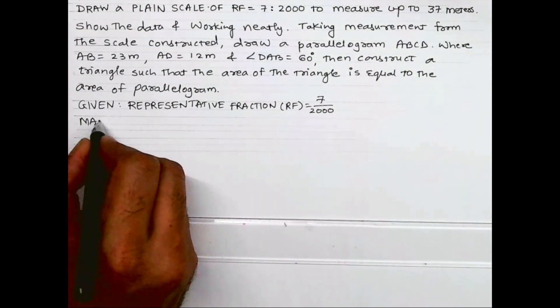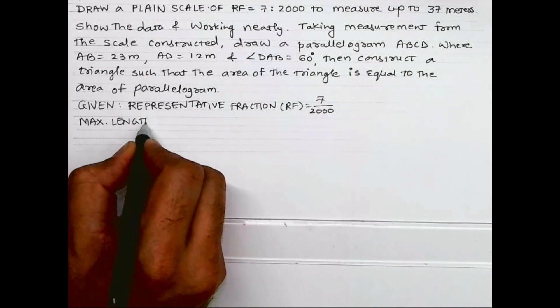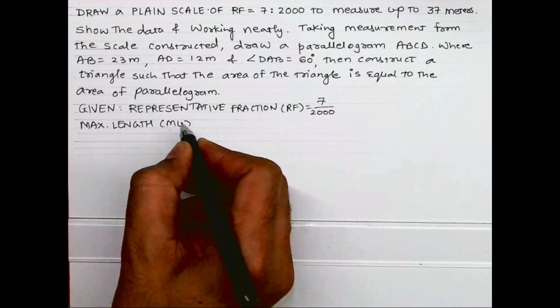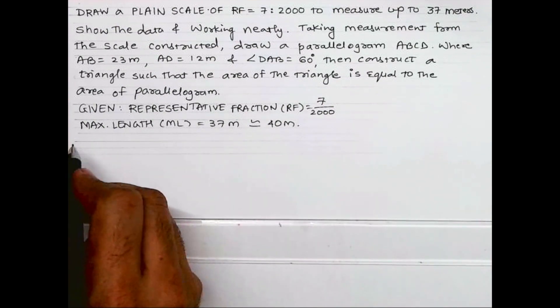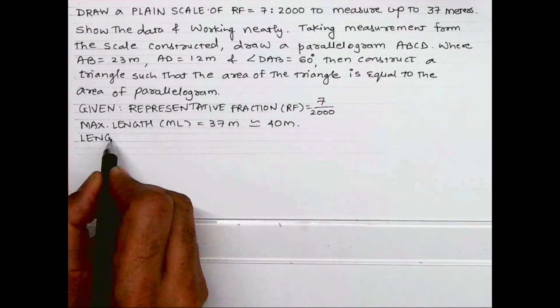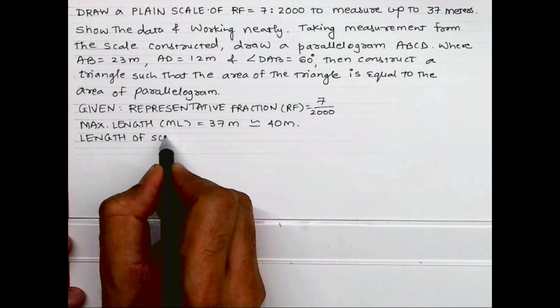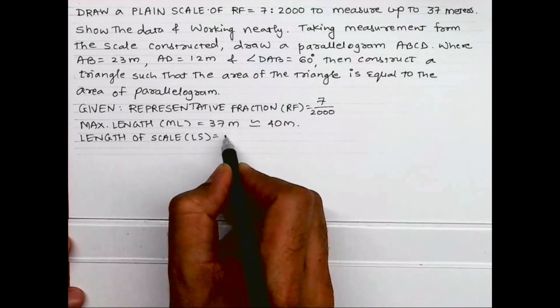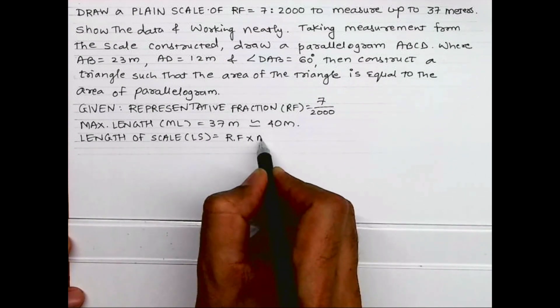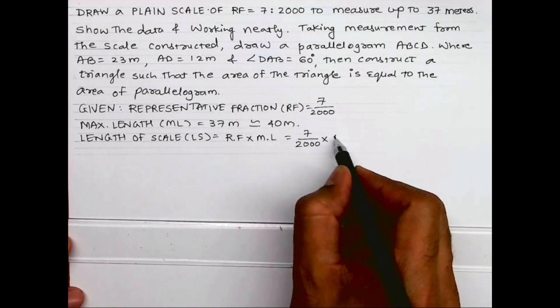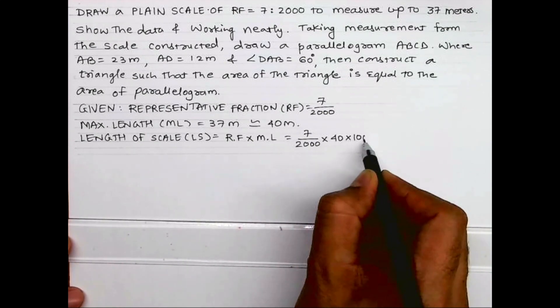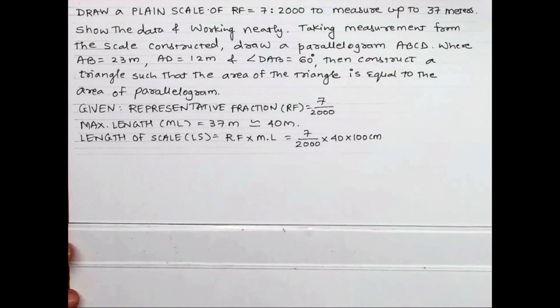So RF is 7 upon 2000. What is maximum length? Here if you see maximum length is 37 meters, so we'll round off to 40. Always remember we'll round off to next high digit. Now we know length of scale LS is equal to RF into ML, so 7 upon 2000 into maximum length is 40 meter, so 40 into 100 centimeter. When you do this calculation, 7 upon 2000 into 40 into 100, it will be 14 centimeter.